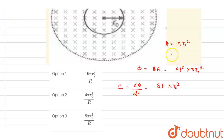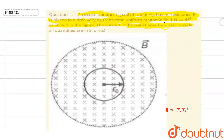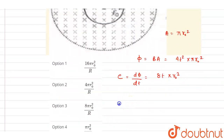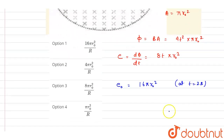Now that we have the induced EMF, we can evaluate it at t = 2 seconds: induced EMF = 16πr₀². Since we have the induced EMF, we can find the current as induced EMF divided by resistance R, giving current = 16πr₀² / R at t = 2 seconds.